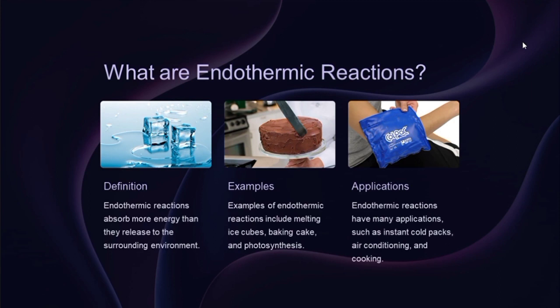Another example of exothermic reaction is respiration, which involves a breakdown of glucose to release energy. The second one is endothermic reactions. Endothermic reaction is a chemical reaction that absorbs more energy than it releases to the surrounding environment. This is different from exothermic reactions — exothermic reaction is a reaction which releases more energy, while endothermic reaction absorbs more energy.